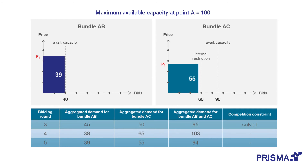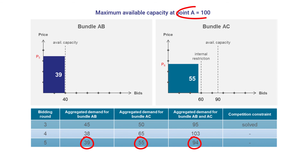Now, in the fifth round, both auctions result in an undersell, which ends the auction. The result is as follows: for bundle AB an aggregated 39 capacity has been allocated, and for bundle AC 55, which fulfills the overall competition constraint of 100.